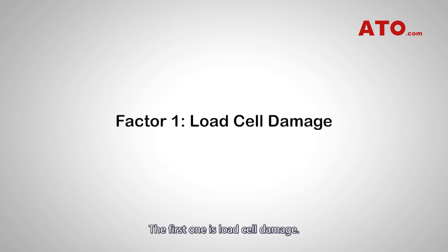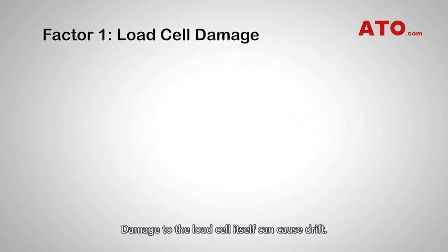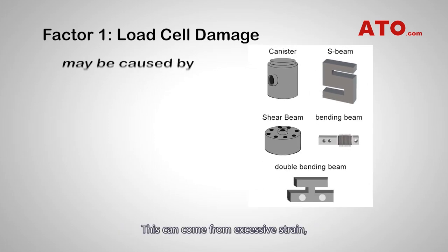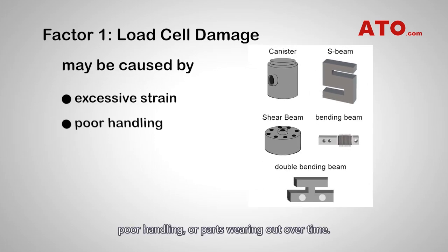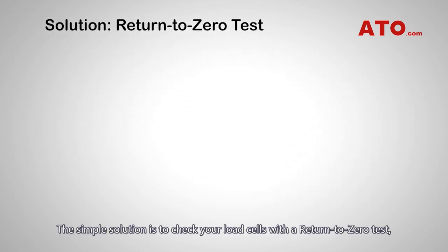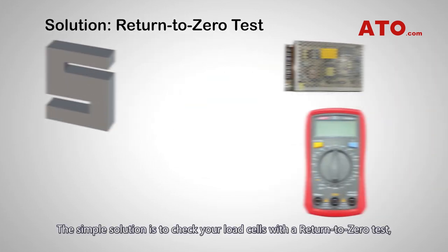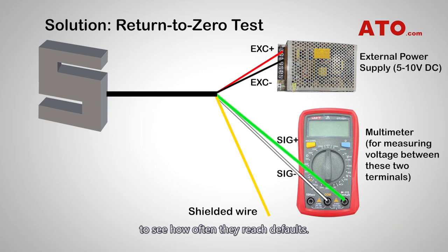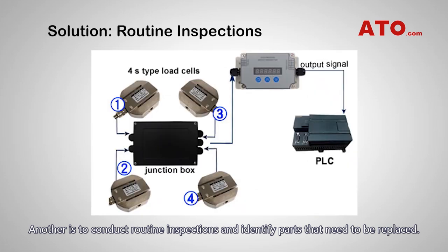The first one is load cell damage. Damage to the load cell itself can cause drift. This can come from excessive strain, poor handling, or parts wearing out over time. The simple solution is to check your load cells with a return-to-zero test to see how often they reach defaults. Another is to conduct routine inspections and identify parts that need to be replaced.